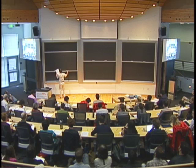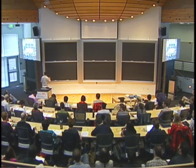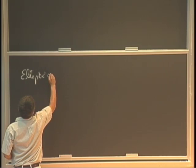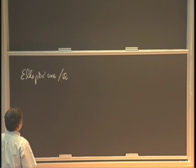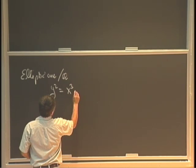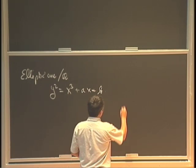My main object in this lecture is about elliptic curves. For simplicity today, I want to talk about elliptic curves over the rational numbers. These will be given by a Weierstrass equation, and you want to have a non-vanishing discriminant.